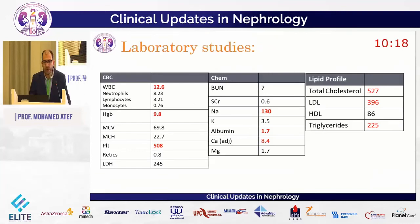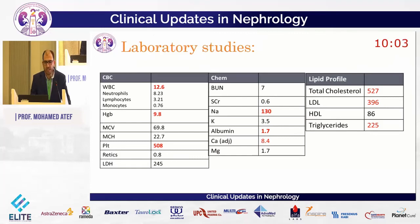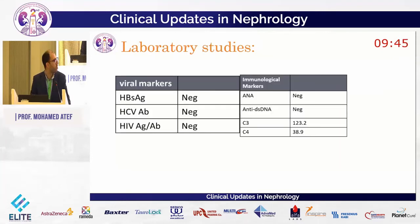Laboratory investigations showed hemoglobin 9.8 g/dL, white cell count 12.6, and platelet count high-normal. Chemistry showed normal serum creatinine and serum albumin of 1.7 g/dL. Lipid profile showed hypercholesterolemia: total cholesterol 527 mg/dL, LDL cholesterol 396 mg/dL, and triglycerides 225 mg/dL. Viral markers were negative and immunological markers were non-contributory.